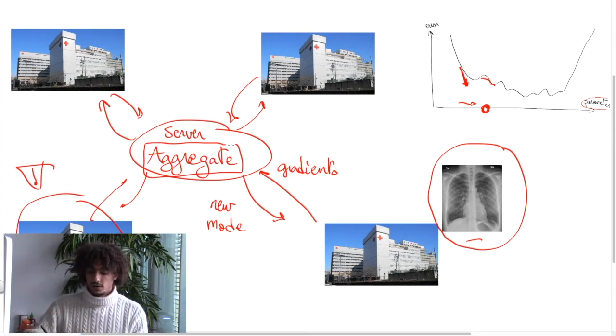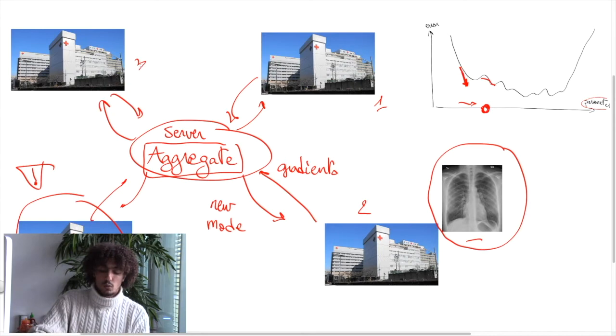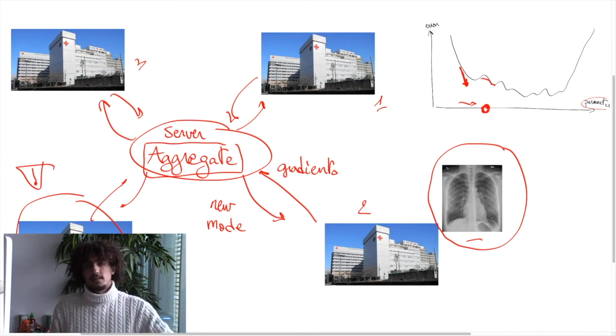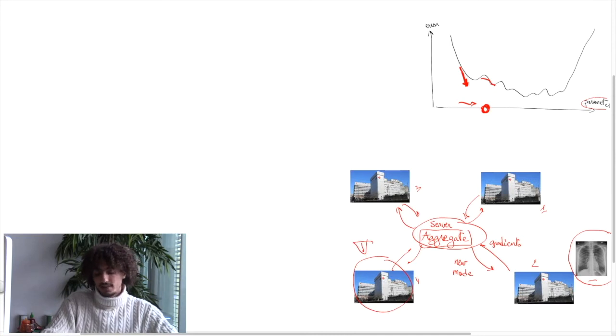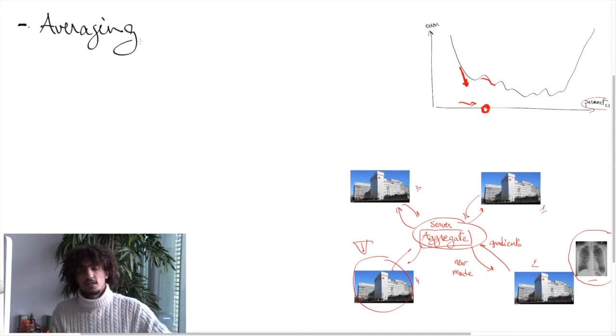The question we ask here is how could this aggregation done by the server be resilient to the presence of some adversaries among those hospitals that we would call workers? If we look at today's distributed machine learning, we find that the aggregation rule is mostly based on averaging or variants of it. And the problem with averaging is that you can fake it, you can pull the average or a linear combination, you can pull it wherever you want if you are an adversary.